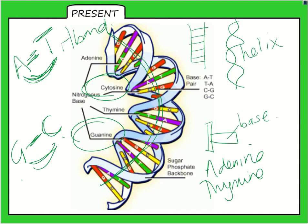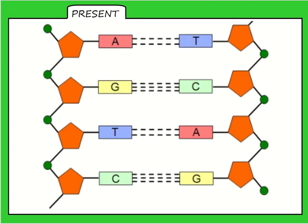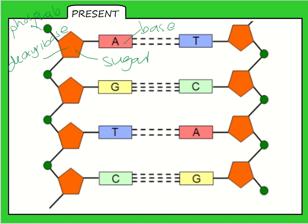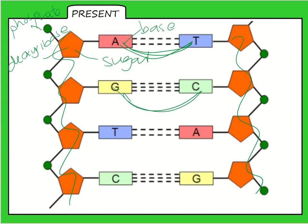If we unravel the DNA and look at it, the sides of the ladder are made of chemicals: deoxyribose sugar and phosphate, forming a phosphate-sugar backbone. The bases are made of nitrogen — there are four nitrogenous bases. Complementary base pairing applies: adenine always pairs with thymine, guanine always pairs with cytosine, and the bonds between them are hydrogen bonds.